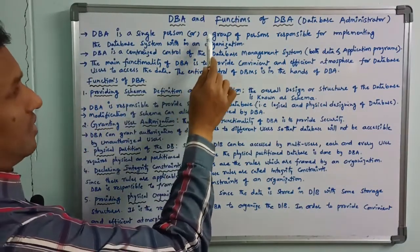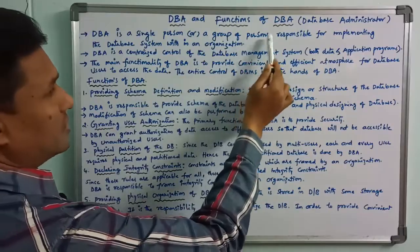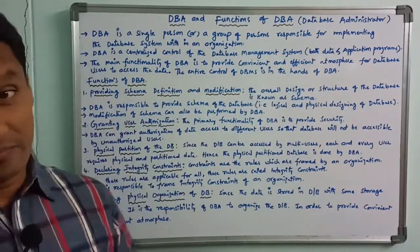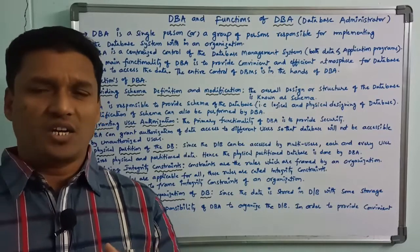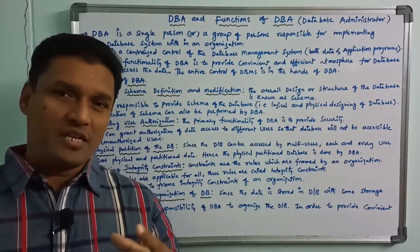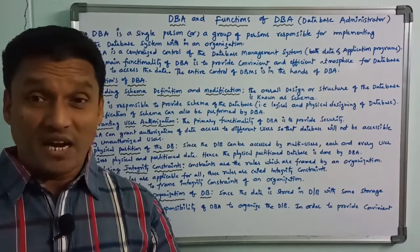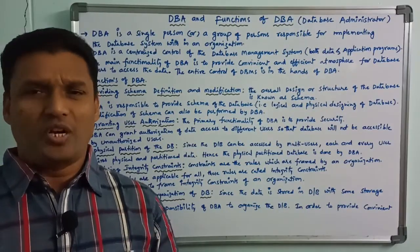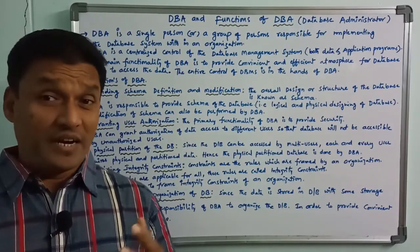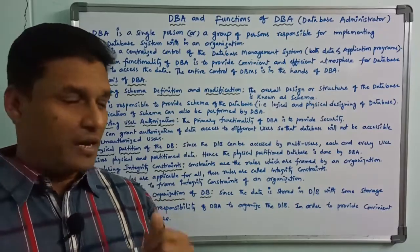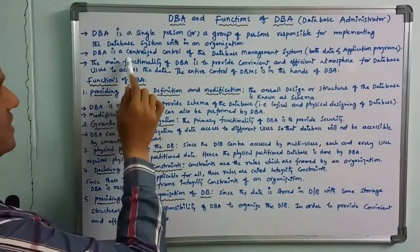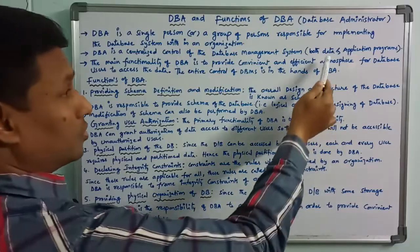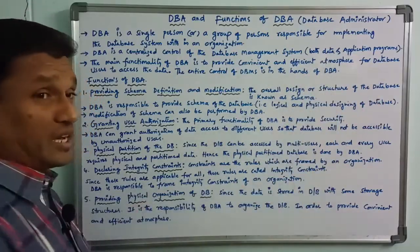DBA is a single person or a group of persons responsible for implementing the database system in an organization. DBA means database administrator. DBA is a centralized control of the database management system, both data and application programs.